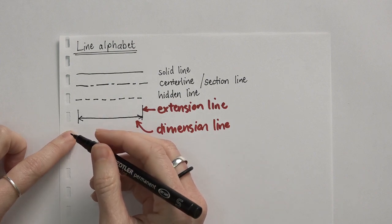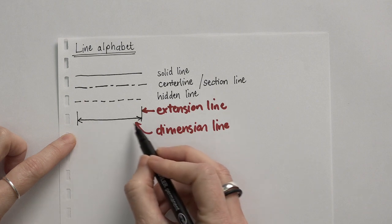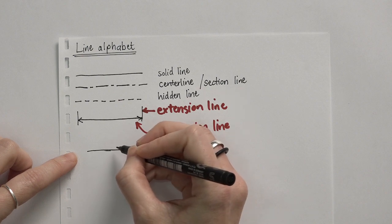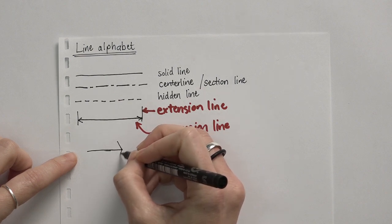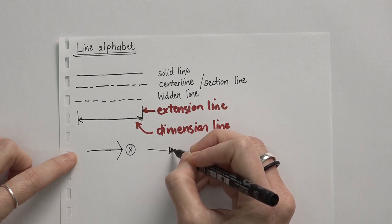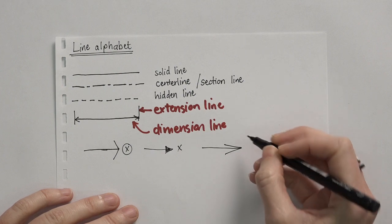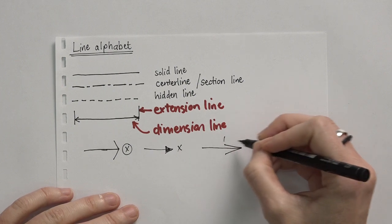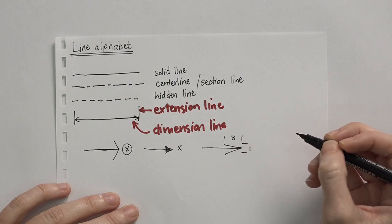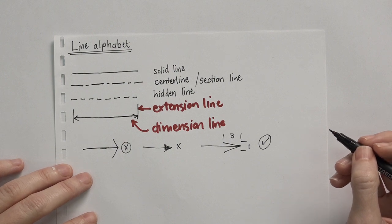Another important thing when looking at dimension lines is the arrows on either end. The arrows have to be at a specific ratio. We don't want them to be wide open, and we don't color in the arrow points. Rather, we want a sharp, thin arrow — the length of the arrow is 3 to the width of 1. This is the correct way to draw arrowheads when drawing freehand.